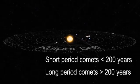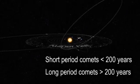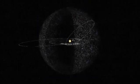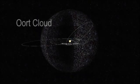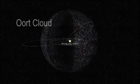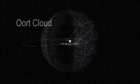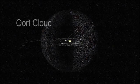Long period comets have periods of thousands or even millions of years. Most long period comets come from a very distant region of the solar system called the Oort Cloud. The Oort Cloud is about 50,000 to 100,000 times the distance from the sun to Earth.